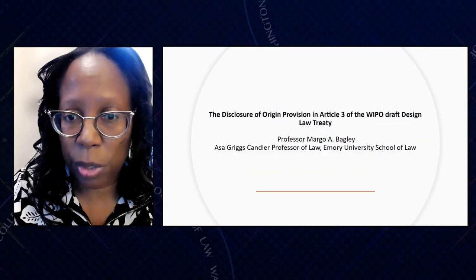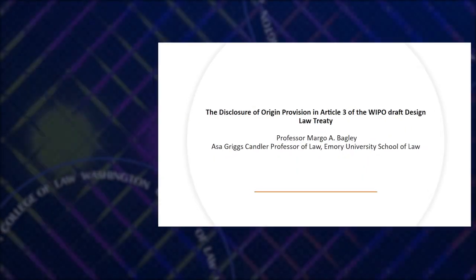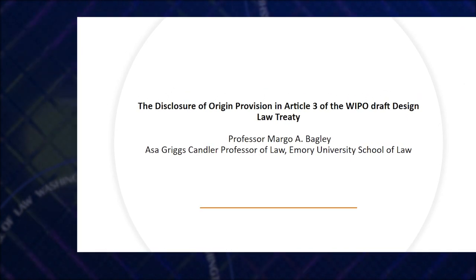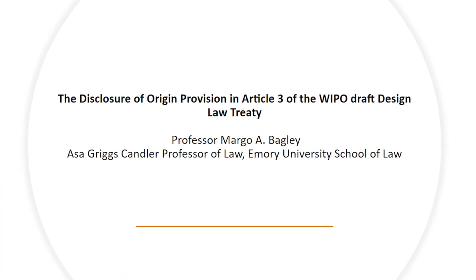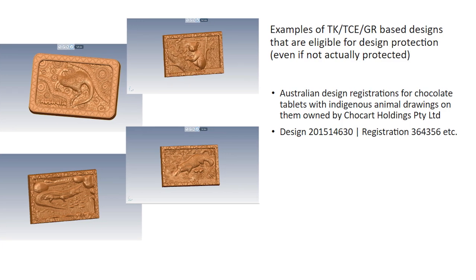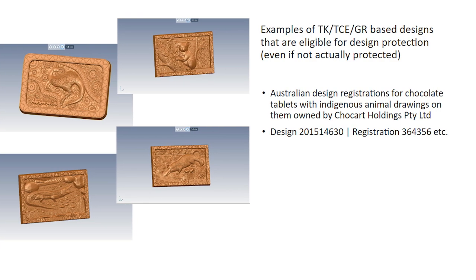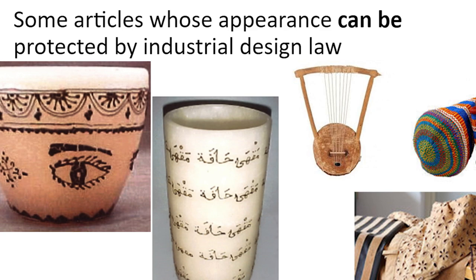Looking at providing a mandatory disclosure of origin requirement for genetic resources and associated traditional knowledge, there were concerns, particularly in the African group, about lacking the ability even to require disclosure of origin of traditional knowledge, traditional cultural expressions, or genetic resources that could be used in creating a protectable design.